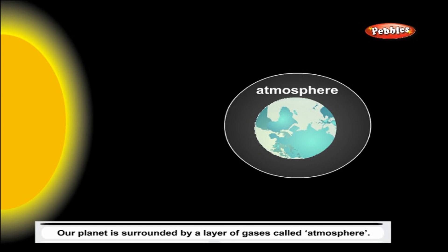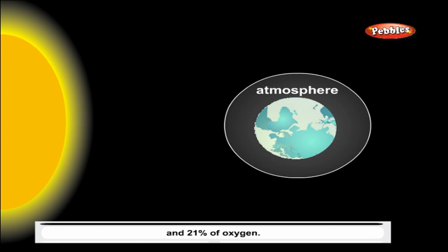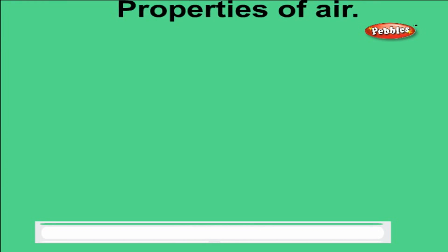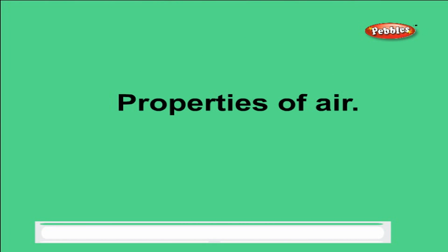Air is a mixture of several gases. Our planet is surrounded by a layer of gases called the atmosphere. The atmosphere contains 78 percent nitrogen and 21 percent oxygen.